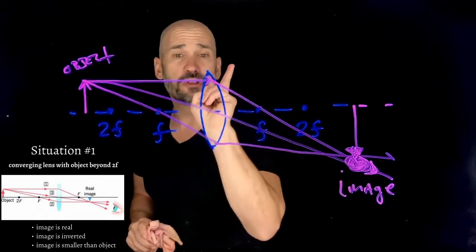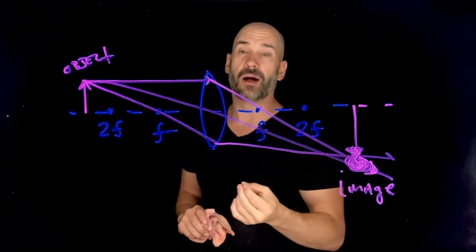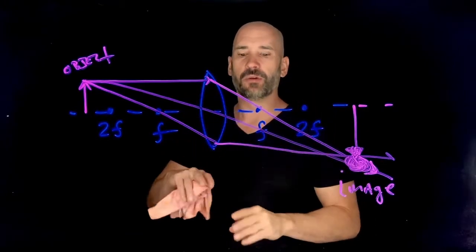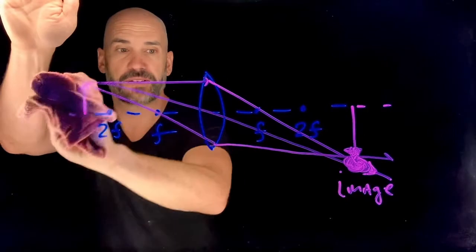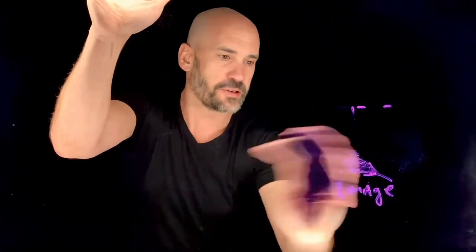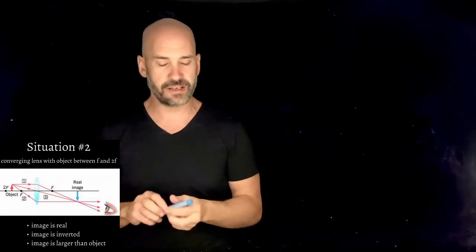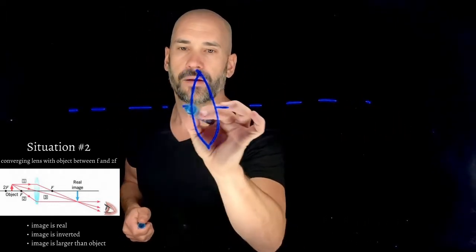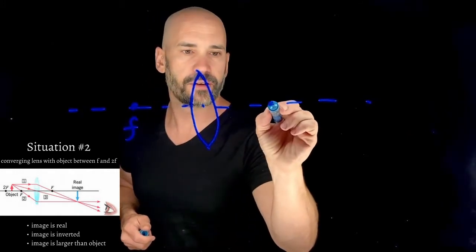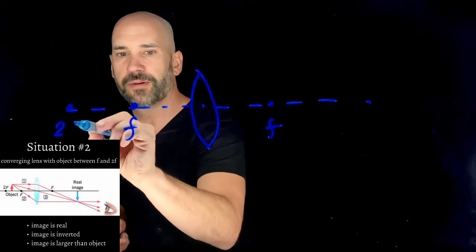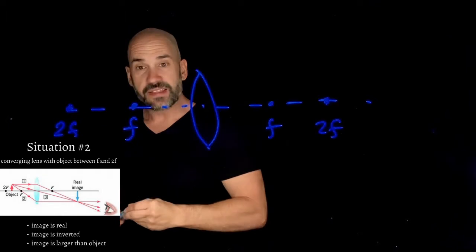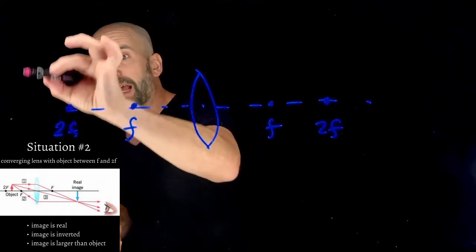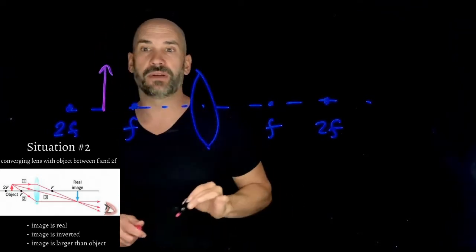Technically we could get away with only doing two special rays, since they just have to intersect at one point. The third is just a confirmation. In situation number two, we have a converging lens with the object between f and 2f. I have my focal lengths and my two times focal lengths marked on either side.